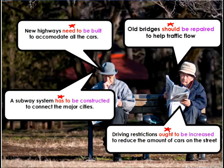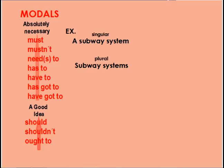Notice that in all of these sentences, we're not talking about who is doing these things — who is building highways, who is repairing bridges, who is constructing subway systems, or who is increasing driving restrictions. That's the idea of the passive voice: who is doing the action is not important. Now let's look at the different modals I can use to express my opinion or suggestion.